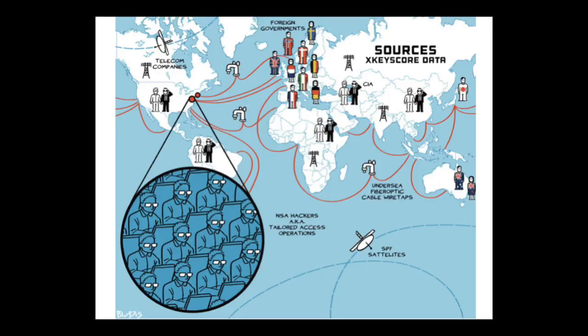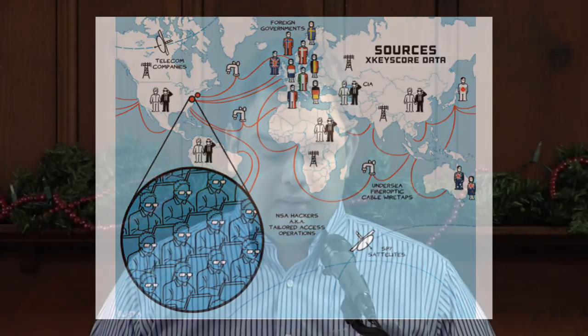After PRISM was revealed, there was another leaked NSA program called Muscular. Under this program, the US government would not directly work with the companies, but instead would tap the cables that carry internet traffic around the world and collect information without the knowledge of internet companies — things like cookies and fingerprints that uniquely identify you, to track people across the world. They created a government search engine called XKeyScore, using which you could search for, say, 'who went to Germany and speaks Arabic' and identify all those users. This bulk data collection was finally ruled illegal in 2015.